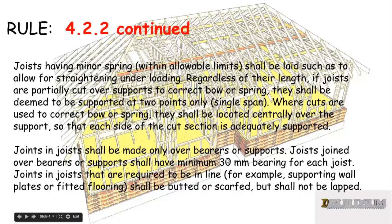Joists having a minor spring within allowable limits shall be laid so as to allow straightening under loading. Regardless of their length, if the joists are partially cut over supports to correct bow, they shall be deemed to be supported at two points only, becoming a single span rather than a continuous span. Where cuts are used to correct bow or spring, they shall be located centrally over the support so that each side of the cut section is adequately supported.